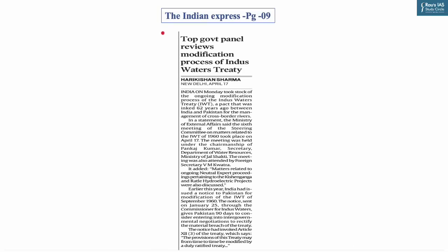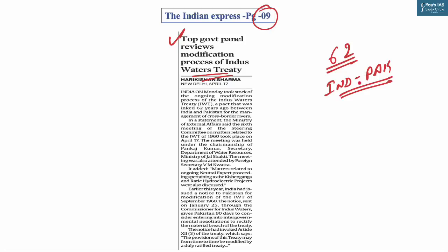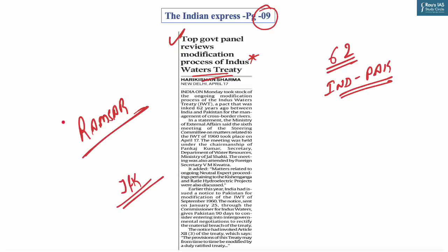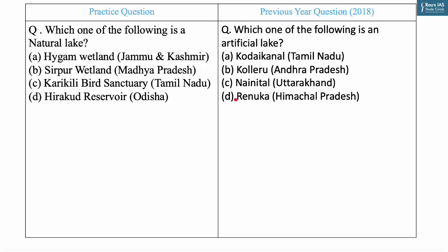The next question is based on news from page nine of the Indian Express. India took stock of the ongoing modification process of the Indus Water Treaty, a pact inked 62 years ago between India and Pakistan for management of cross-border rivers. Since Indus River basin details were covered in previous sessions, today's question is curated on wetlands of international importance in the Jammu and Kashmir region identified under the Ramsar Convention. In 2018, UPSC asked which among the following is an artificial lake.